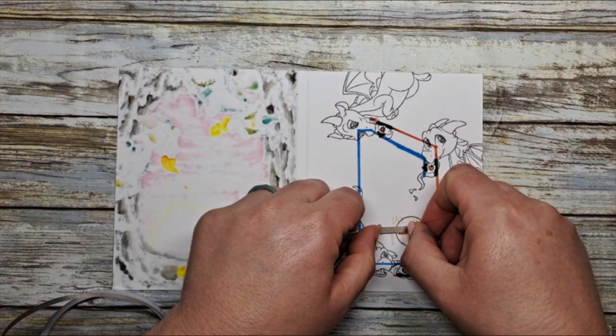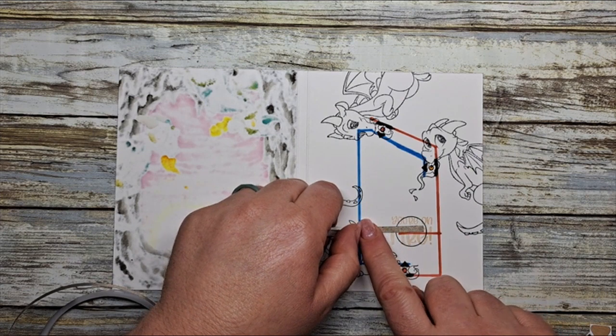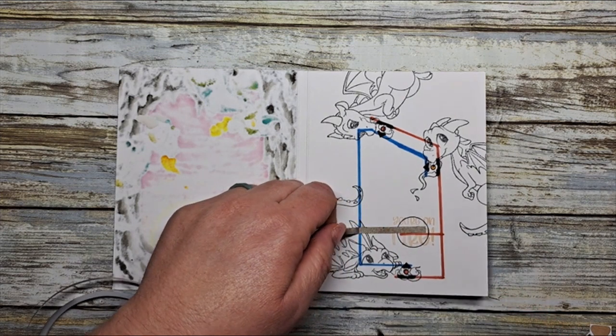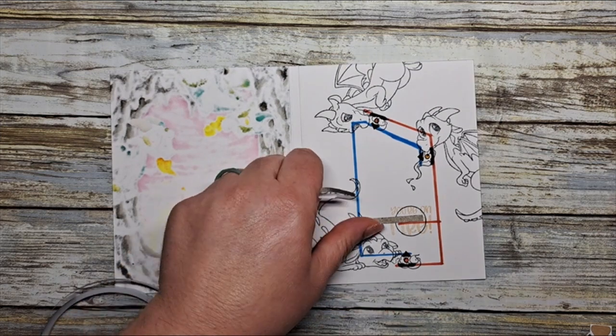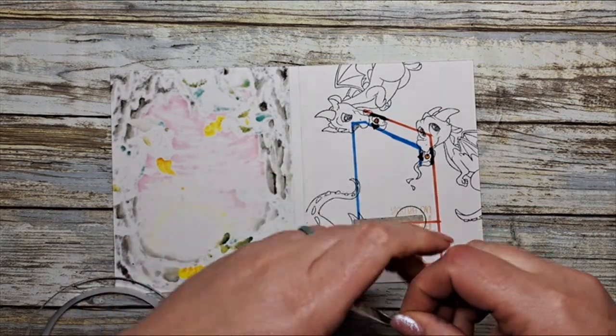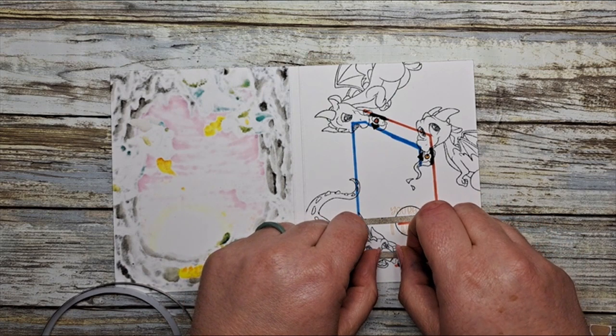Conductive fabric tape is extremely easy to cut, it's just a snip snip and away you go. Let's finish off the rest of our circuit.